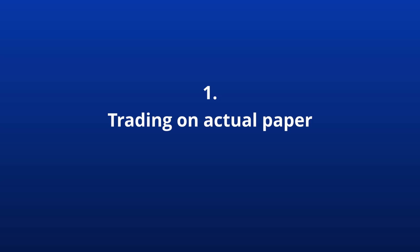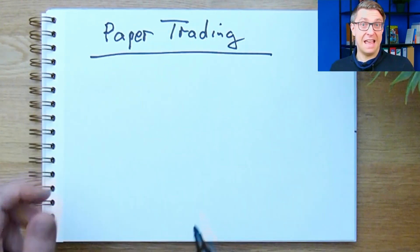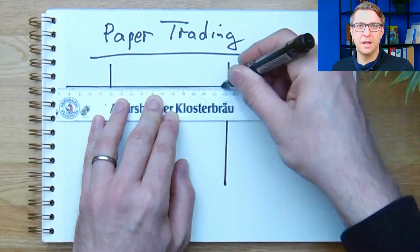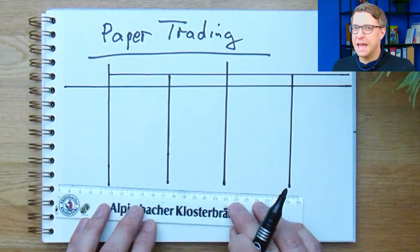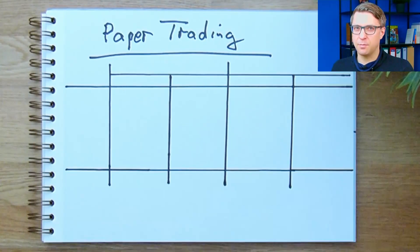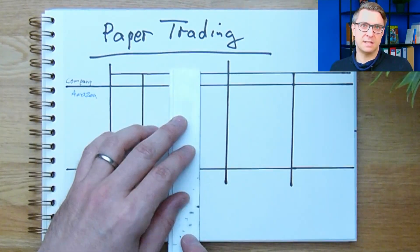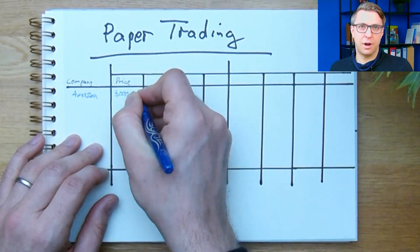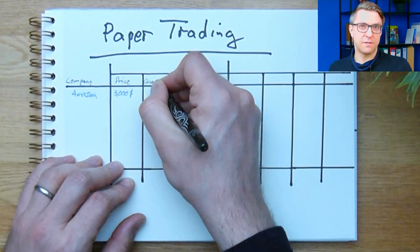Trading on actual paper. For doing this you really don't need much more than a piece of paper and a pen. Create a little table. On the left column you write the companies or stocks you want to buy. As you may want to buy a specific company multiple times, this column can contain the name of a company more than one time. The second column contains the buying price. The third column will then contain the quantity of stocks you bought.